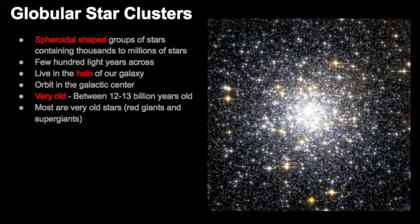Globular star clusters are spheroidal-shaped groups of stars. They can contain between thousands and up to millions of stars, and they're typically a few hundred light years across. They often live within the halo of our galaxy, which means they're orbiting the galactic center — they're not really located within the arms of the galaxy. These star clusters are very, very old, often between 12 to 13 billion years old, sometimes a little younger.